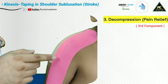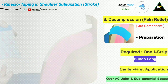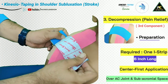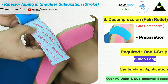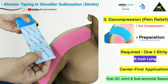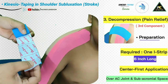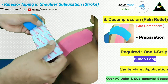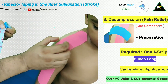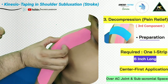For the third application, we address the site of pain using decompression taping with a center-first application method. A six-inch long I-strip is needed, applied so that the tape covers the AC joint as well as some portion of the subacromial space.